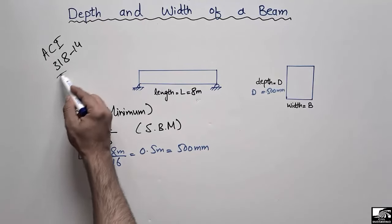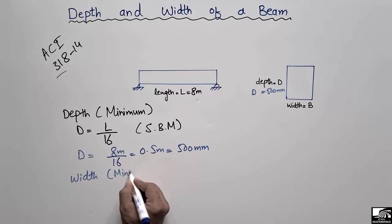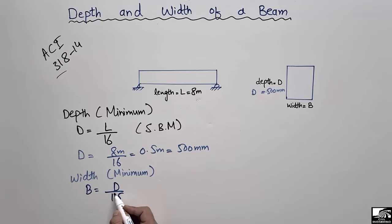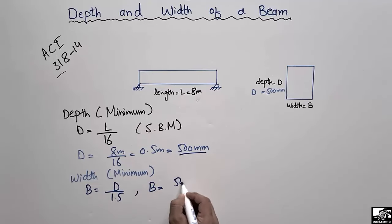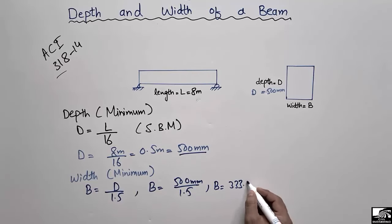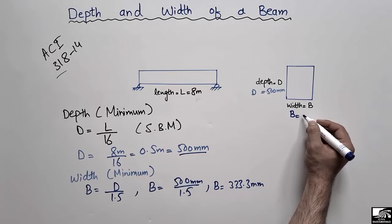According to another formula given by ACI 318-14, the minimum width or breadth of a beam is equal to the depth of the beam divided by 1.5. This formula is used to calculate the minimum width of a simply supported beam. We know that the depth d is 500 millimeters, so the width b = 500 / 1.5 = 333.3 millimeters. This is how to find the minimum width or breadth of a beam.